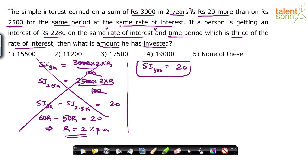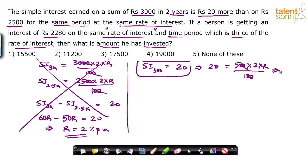Simple interest on 500 rupees is 20 for two years. Using SI = PTR/100: 20 = 500 × 2 × R / 100. Simplifying, R = 20/10 = 2. So R equals 2%, confirming our answer. This single-step approach saves you two to three steps compared to the earlier method.